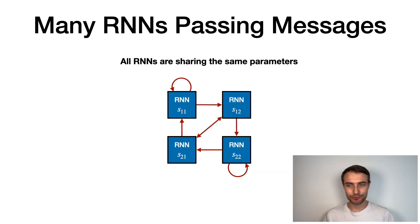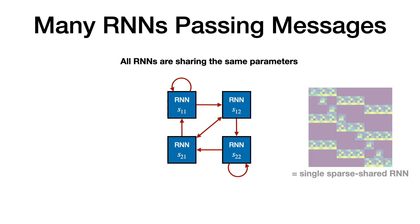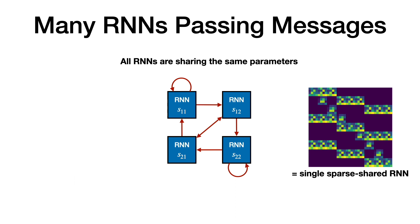The VSML weight matrix we have shown corresponds to many RNNs passing messages to each other. And all of these RNNs share the same parameters. Together, they define a single big RNN with a sparse weight matrix. The next question then is, how these RNNs should be connected to each other?